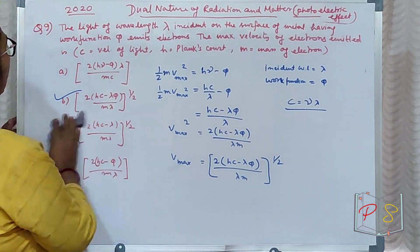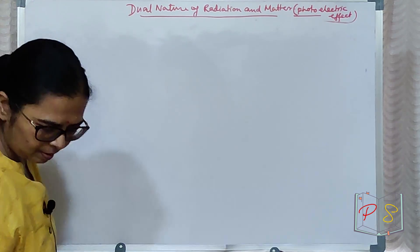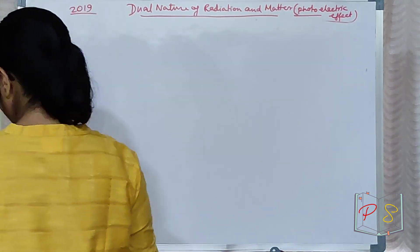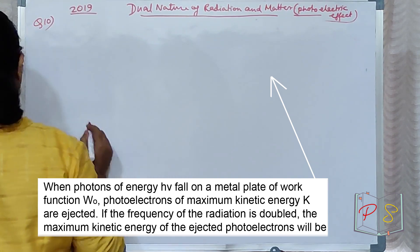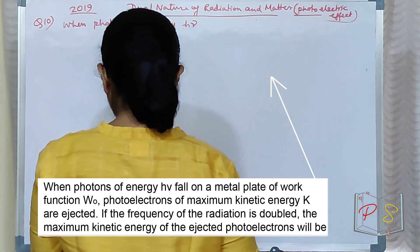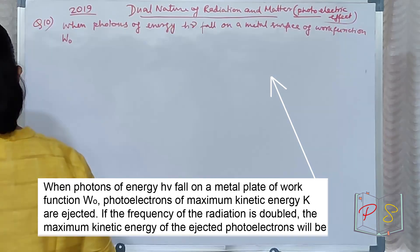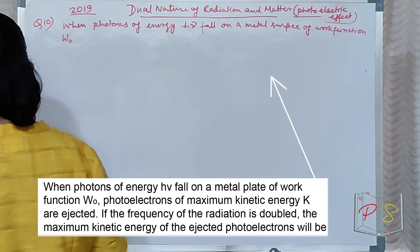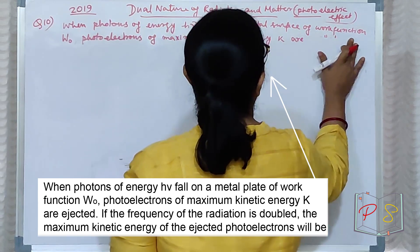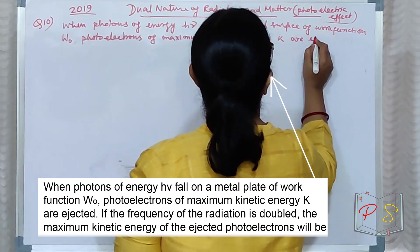Let's look at the question of 2019, my 10 number question. When photons of energy hν fall on a metal plate of work function W₀, photoelectrons of maximum kinetic energy K are ejected. Emitted nahi lika, ejected lika, ejected.